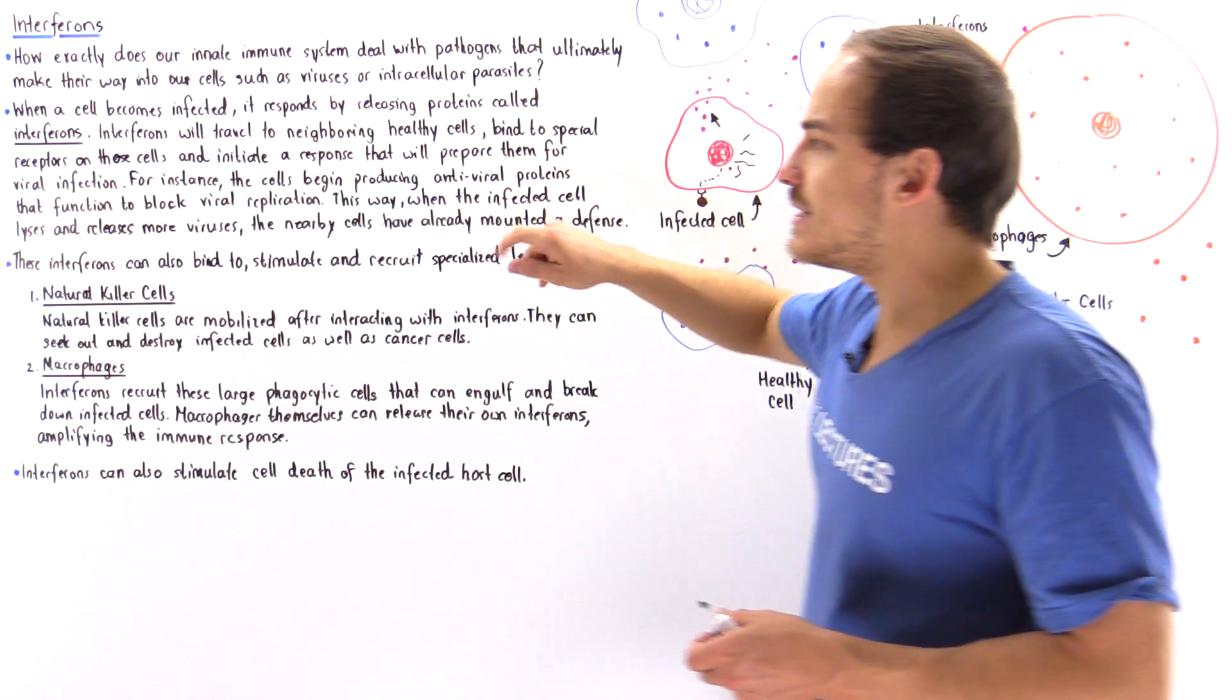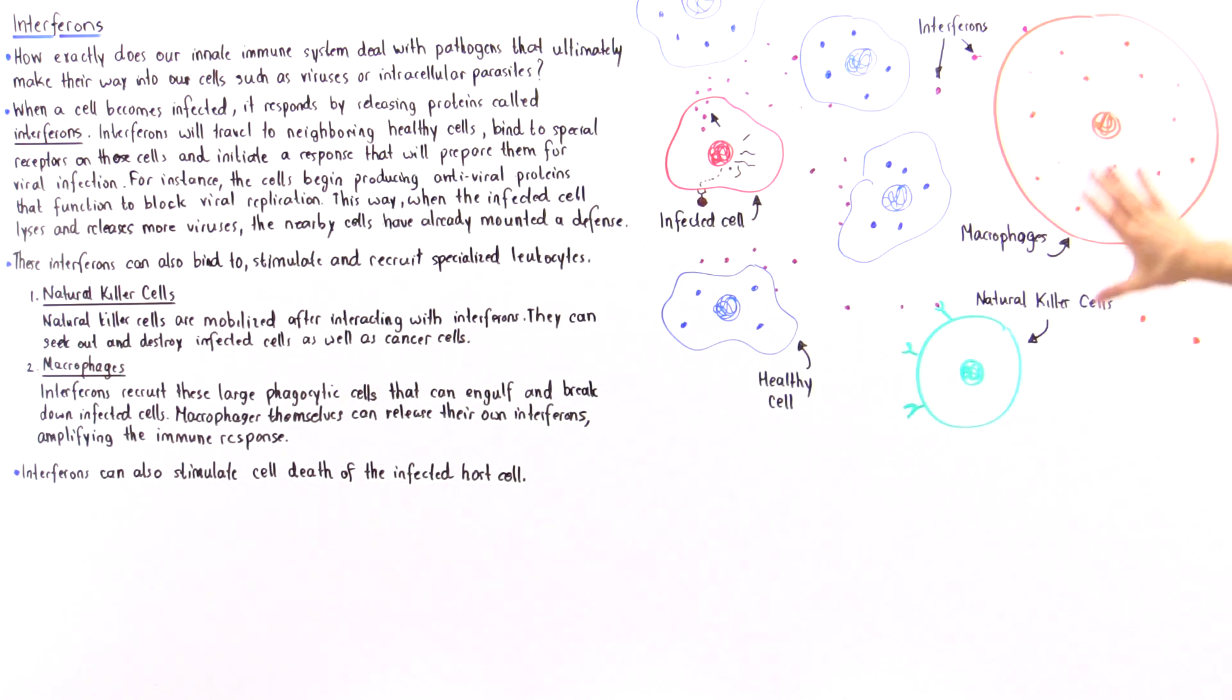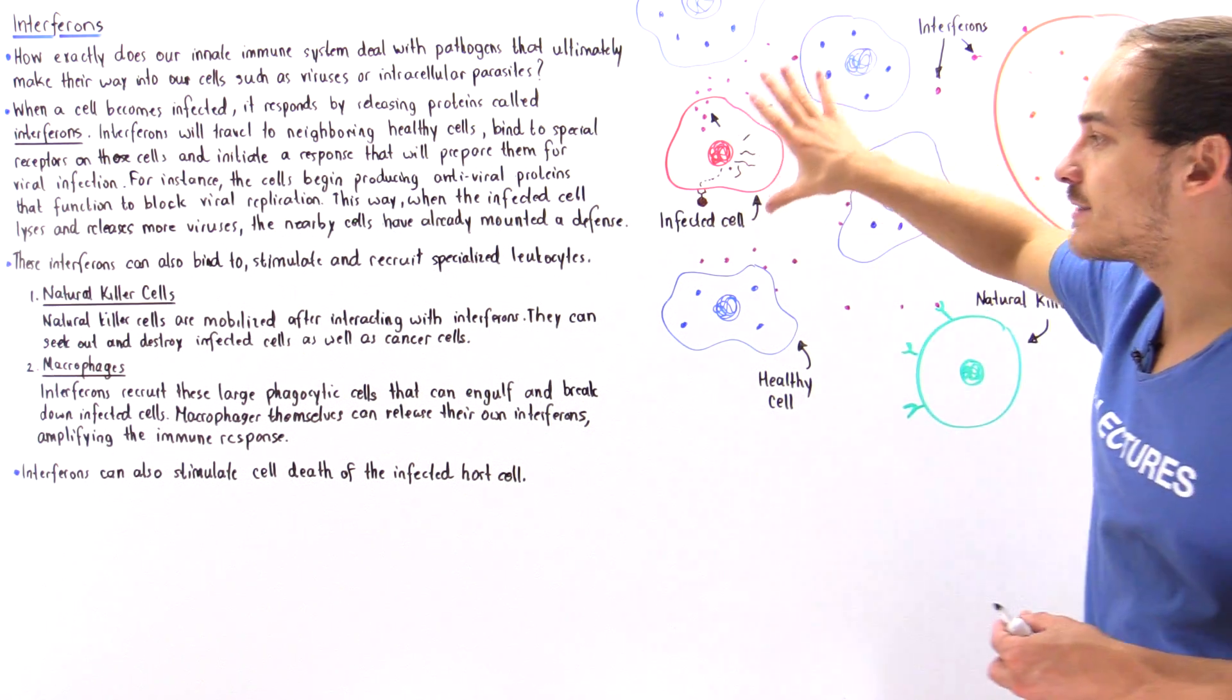Now on top of that, these interferons can also actually bind to these other specialized leukocytes, these other specialized white blood cells. So we have macrophages and we have natural killer cells. So once the interferon interacts with the natural killer cell, it essentially guides that killer cell to this infected cell.